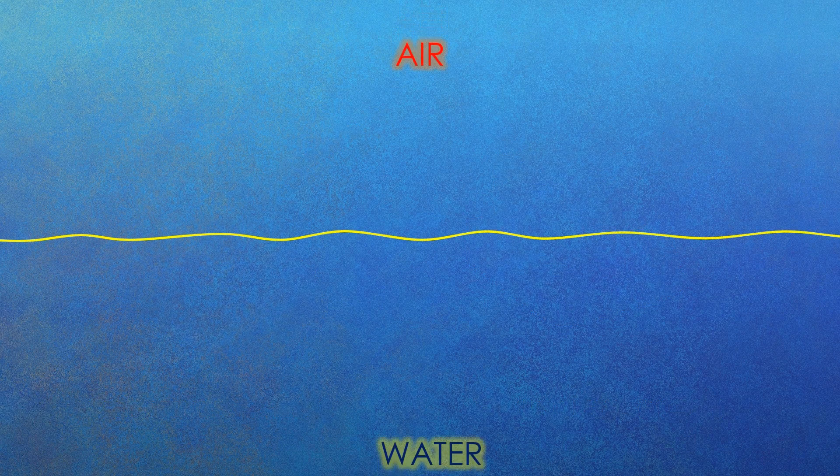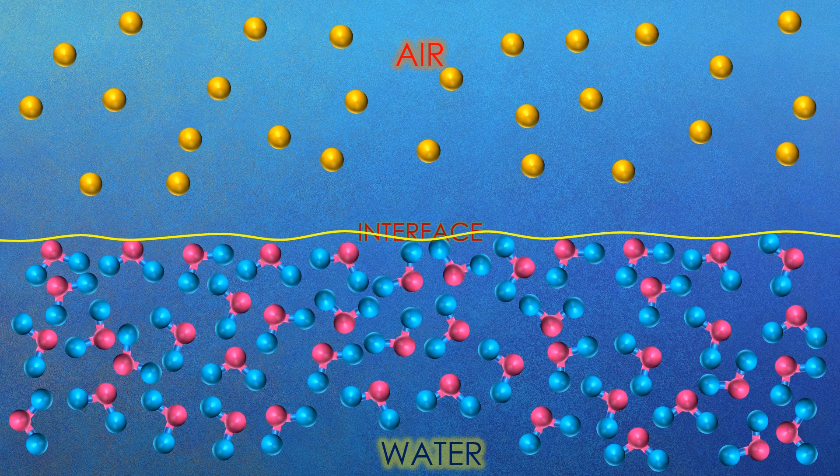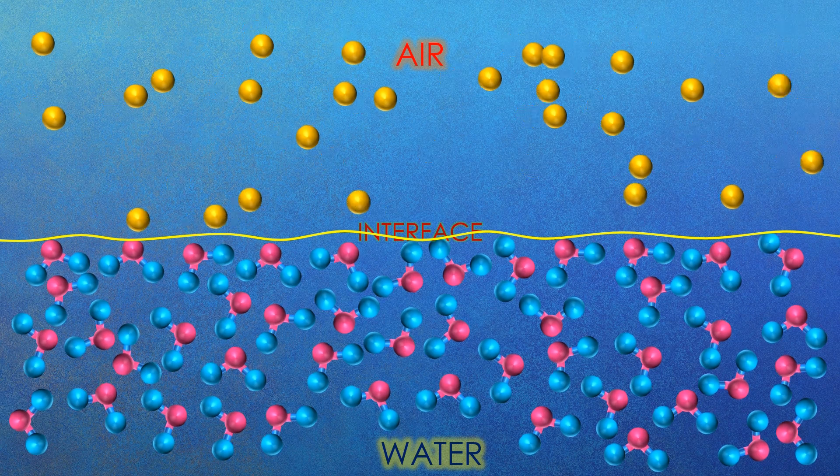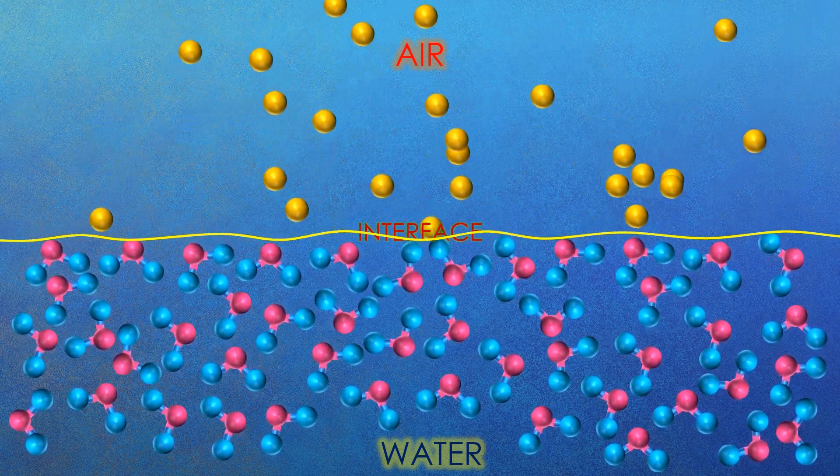Let's consider the upper region is air and the lower region is water and in between them the interface separating the two. Here you can see the water molecules vibrating slowly and many air molecules moving very fast.